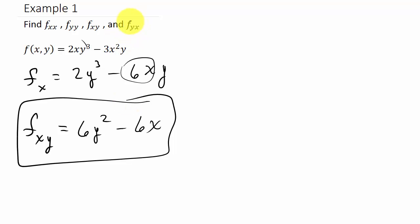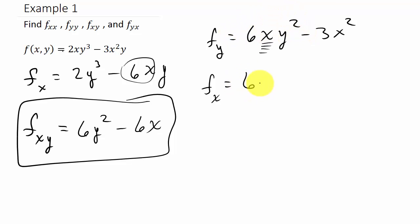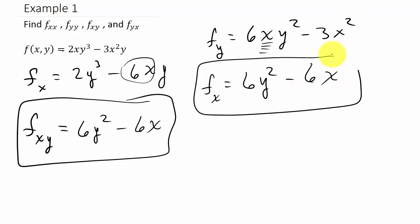For fyx, I take the partial with respect to y first, then x. y is the variable, x is constant. The 3 comes down giving 6xy squared, and the derivative of the constant times y term is just that constant, minus 3x squared. Now taking the partial with respect to x: 6y squared is the constant, so the derivative of 6y squared times x is 6y squared. Then the derivative of 3x squared is 6x. So fyx equals 6y squared minus 6x.